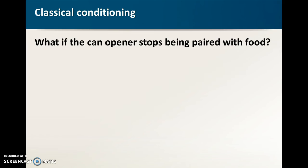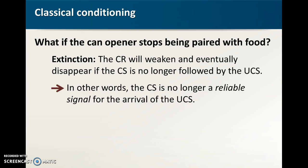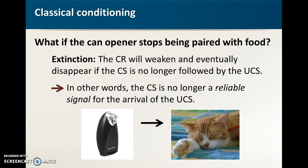Now if we stop pairing the can opener with food or if you want your eyes to no longer dilate when you clap your hands, all you do is you go through extinction. You keep presenting the conditioned stimulus without the UCS. So you run the can opener without giving the cat food or you clap your hands a bunch without turning the lights out. And eventually the conditioned response is just going to weaken and eventually it will disappear. So another way of putting that is that the conditioned stimulus is no longer a reliable signal for the arrival of the UCS. And so we're going to get a bored cat in response to the can opener because he's like I keep hearing that noise not getting food I'm done with reacting to that one.